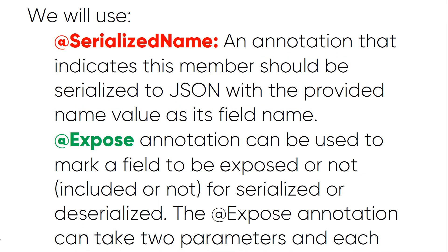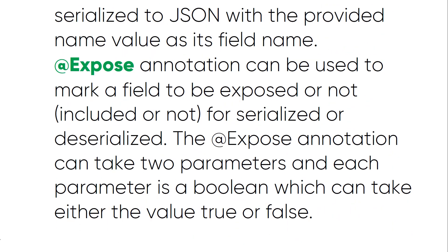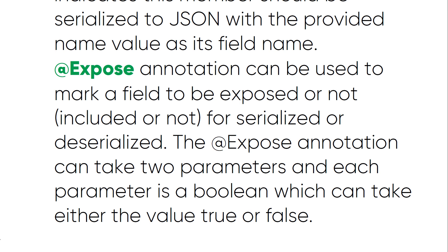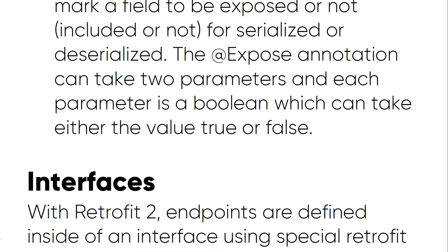The first annotation is @SerializedName, which indicates that this member should be serialized to JSON with the provided name value as its field name. It's very important that the name value should match what's parsed from the JSON API. The second annotation is @Expose, which is used for serialization and deserialization control. The @Expose annotation can take two parameters, each a boolean which can take either a value of true or false.